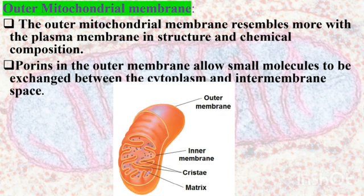Outer mitochondrial membrane: The outer mitochondrial membrane resembles more closely the plasma membrane in structure and chemical composition. Pores in the outer membrane allow small molecules to exchange between the cytoplasm and the intermembrane space.